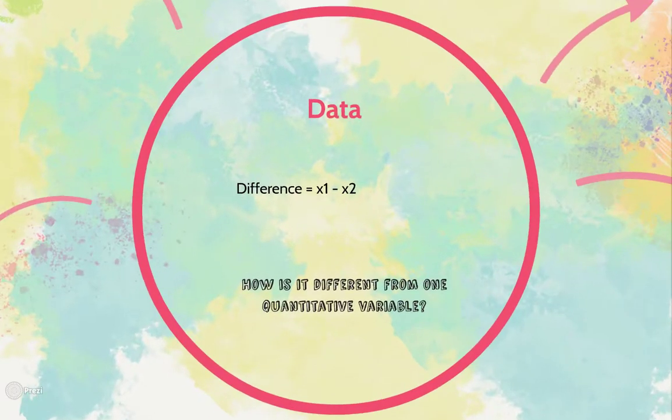The data is called paired data because you have a pair of measurements on one person. What you end up doing is calculating a difference for one person, and it doesn't have to be a person but one unit or subject in your group of interest. So paired data means you have a pair of measurements and then you calculate a difference.